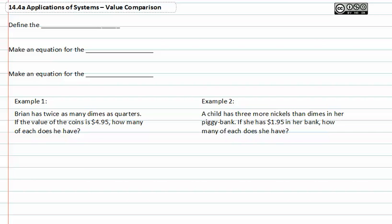When working with value comparisons, you need to define the variables first. Then make an equation for the number, and then make an equation for the value.